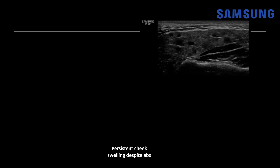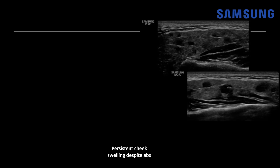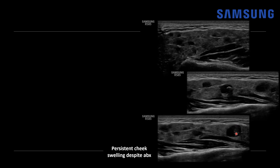This was a boy in his early teens presenting with persistent cheek swelling despite antibiotic therapy. At first glance, this case may look similar to the prior case, with multiple anechoic to hypoechoic rounded foci scattered throughout the gland, and the gland is heterogeneous. But looking more closely, these rounded lesions are non-uniform in size, and some of them have small echogenic areas within them. One is actually echogenic and shadowing, telling us there are some calcifications. There's also heterogeneous debris within some of these cystic foci. This appearance is typical for juvenile recurrent parotiditis.